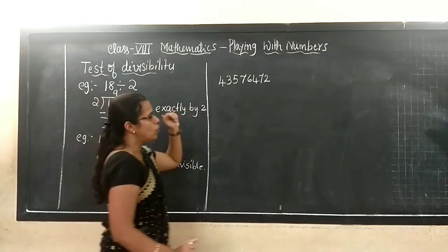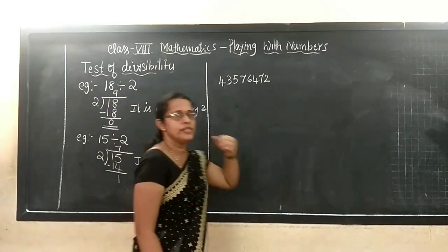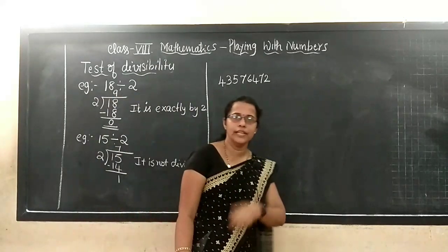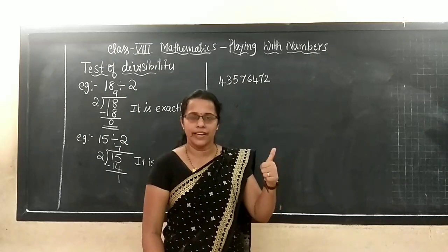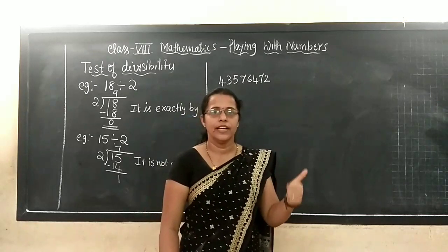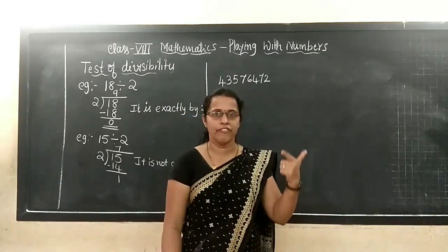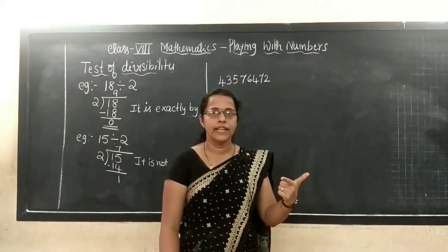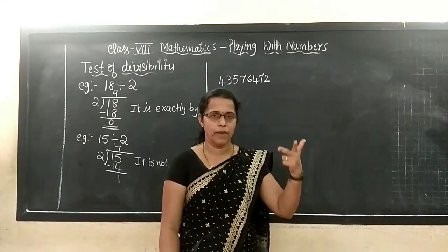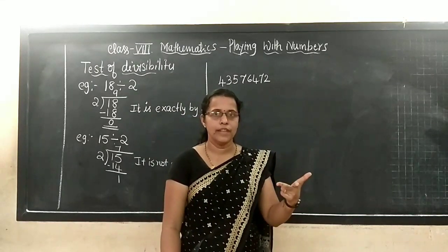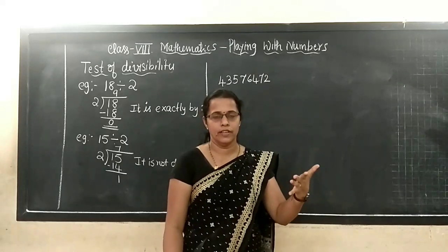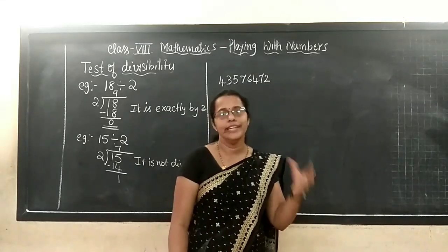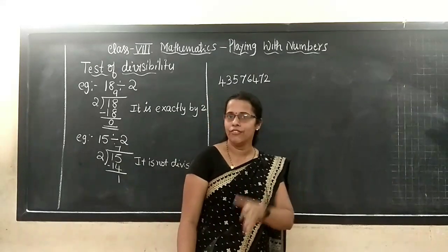So now, which divisibility rules do we have to learn here? Divisibility by 10, divisibility by 5, then divisibility by 2, then 3 and 9. Let us learn them one by one.